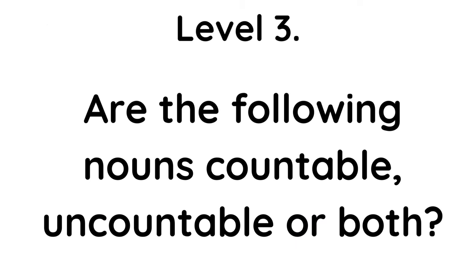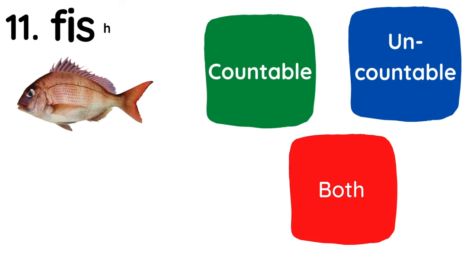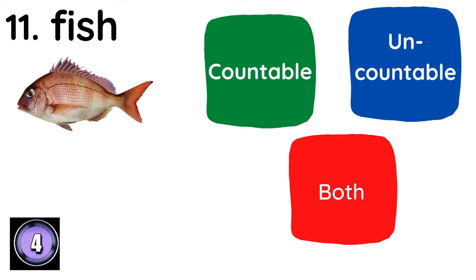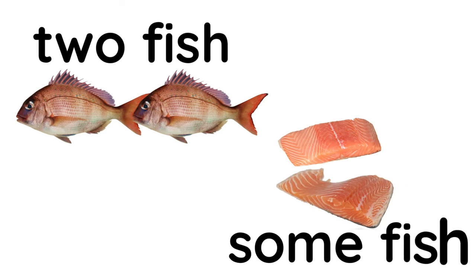Level three. Are the following nouns countable, uncountable or both? Number eleven. Fish. Both. Two fish, some fish.